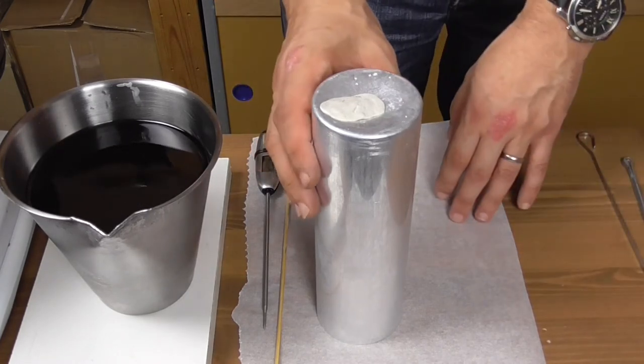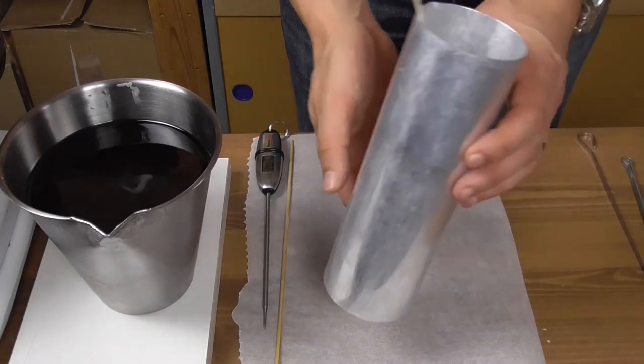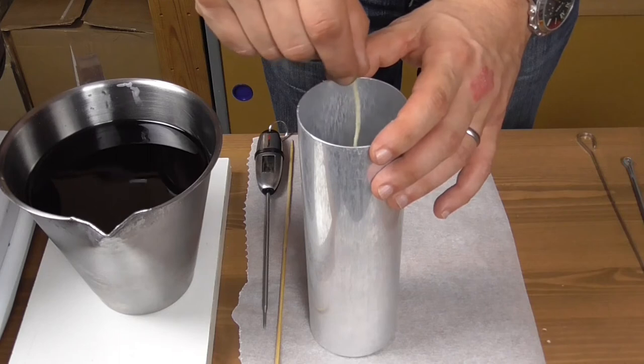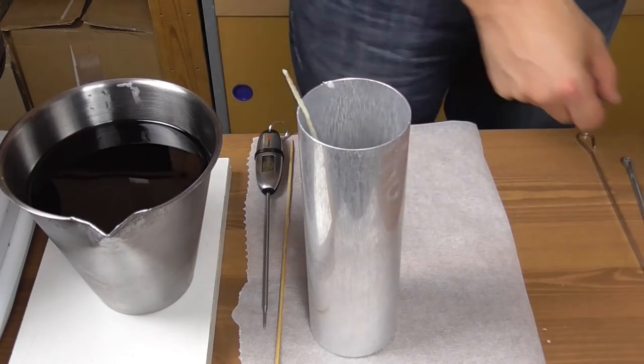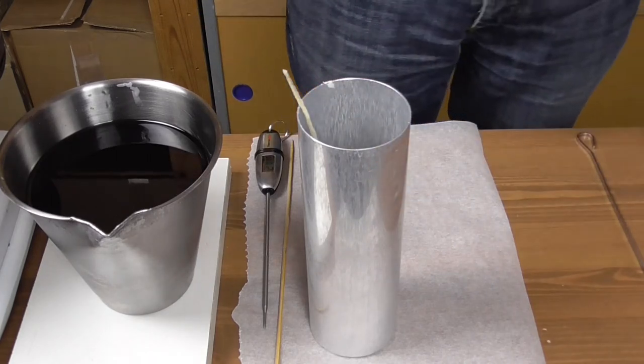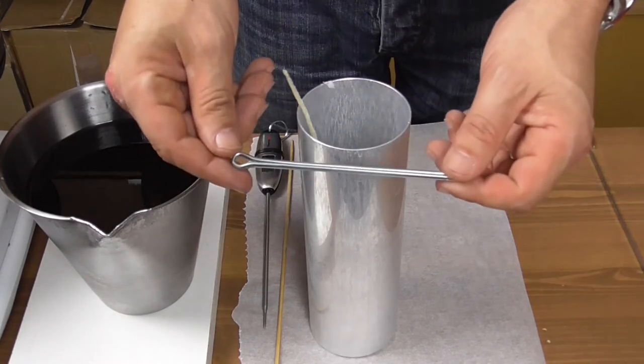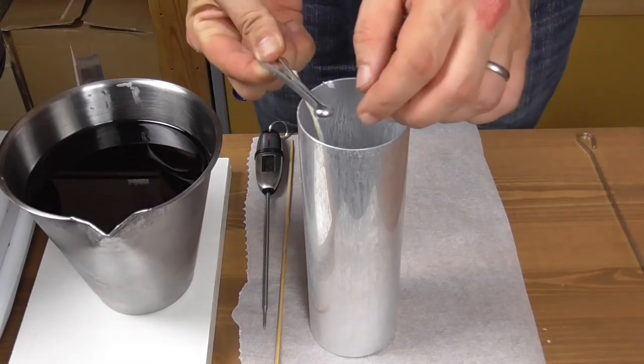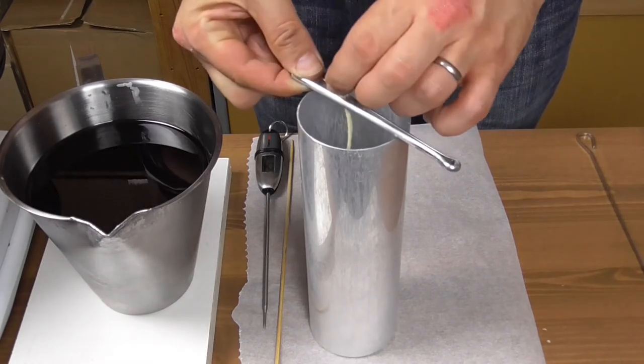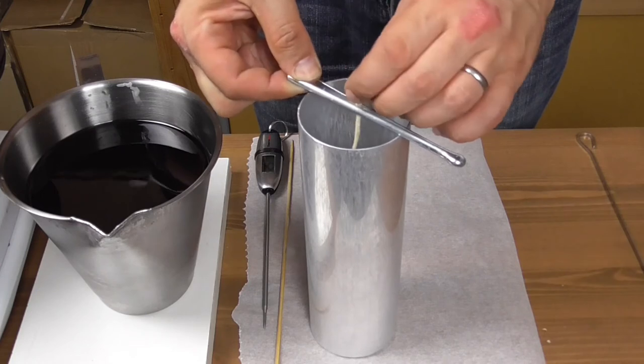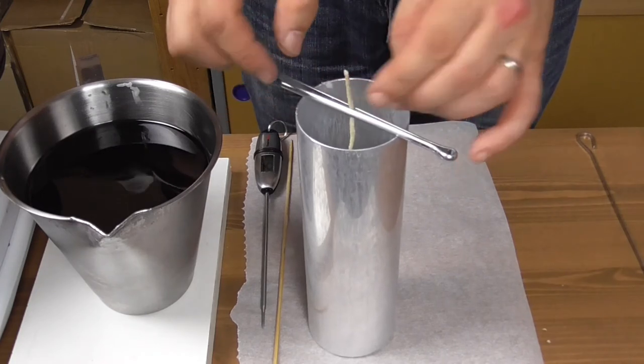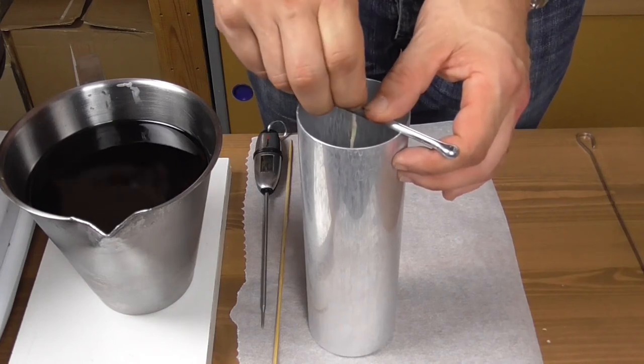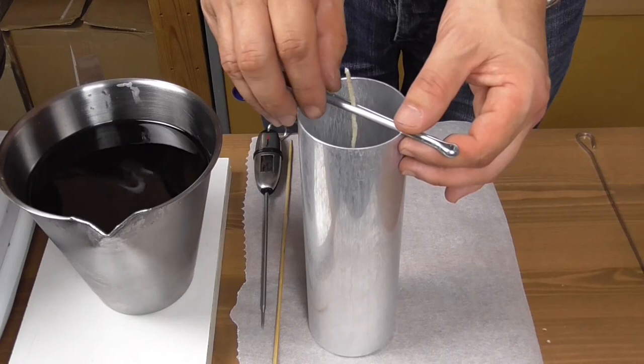Now, turn the mold the right way up. Take the wick holder. Open it up and catch the wick between its two halves, making sure the wick is both taut and perfectly centered. There you go.